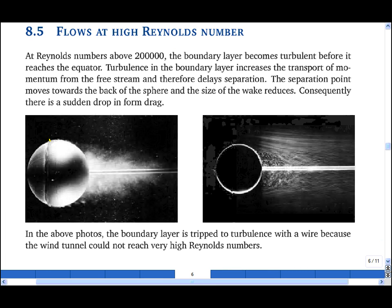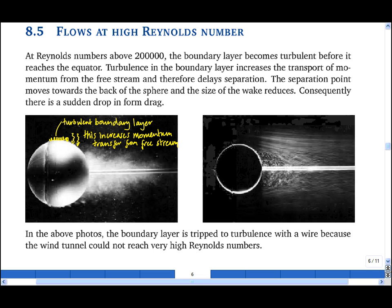This increases the rate of streamwise momentum transfer from the free stream, and this causes the boundary layer to remain attached for longer, such that the separation point is quite far back towards the rear of the sphere. And this is seen perhaps more easily on the time averaged image on the right, in which one can see the separation point and the much smaller region of recirculating flow.